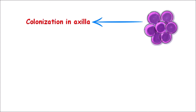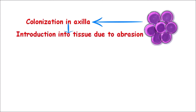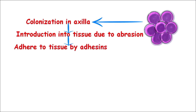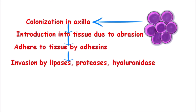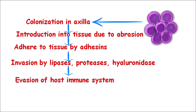Now we will discuss the pathogenesis of Staphylococcus aureus. It often colonizes in the axilla and other skin folds, after which it introduces itself into the tissues due to abrasions on the surface like cuts, or sometimes due to surgical instruments. After this it binds to the tissues with the help of adhesins like bound coagulase or clumping factor, and then causes invasion by breaking down the tissues with hydrolytic enzymes like lipases, proteases and hyaluronidase.